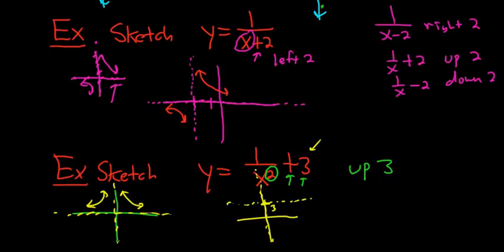Then we just draw the volcano, like this. We take the entire graph and go up 3. When you go up 3, the horizontal asymptote shifts up to 3, and the vertical one stays the same. That's it.